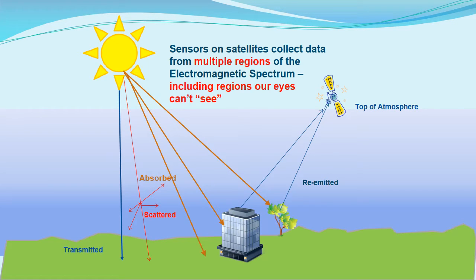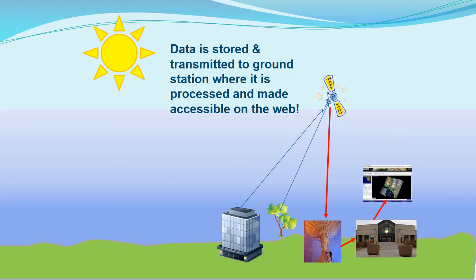Sensors on satellites collect information from multiple regions of the electromagnetic spectrum, including regions our eyes can't see. The Sun's energy can be transmitted, scattered, or absorbed by objects and then re-emitted. The satellite is at the top of the atmosphere, so the energy travels through the atmosphere to the object, which re-emits it back up through the atmosphere. Data is stored on the satellite until it's in visual contact with a ground collection station — this happens to be the EROS data center — where it is transmitted, processed, and made available for download on USGS websites.